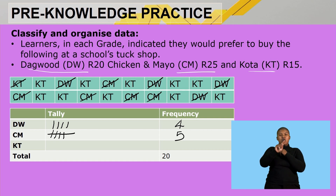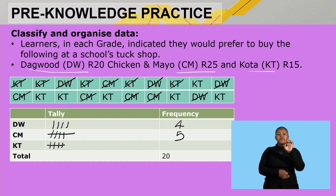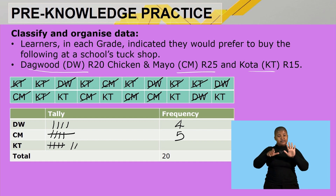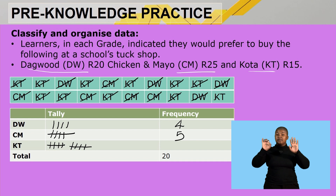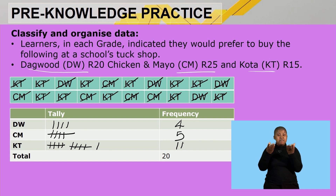Lastly, we have quarter. We record the tally strokes one by one, reaching a total of eleven. We write eleven in the frequency column. When you add all the results in your frequency column — four, five, and eleven — it gives you a total of twenty.